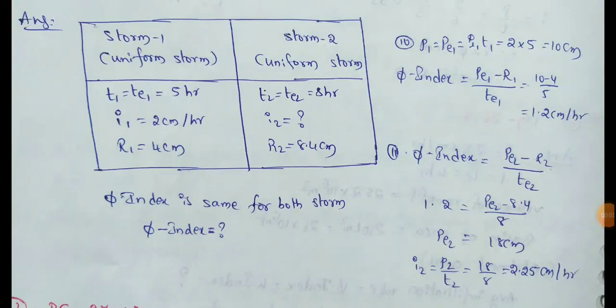In this video, the pi index is the intensity of rainfall. We have two different storms, and we will find out the values.